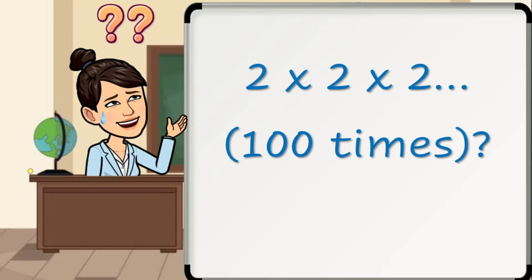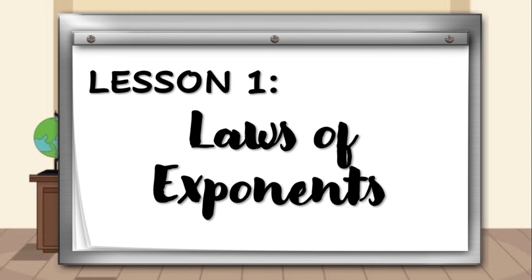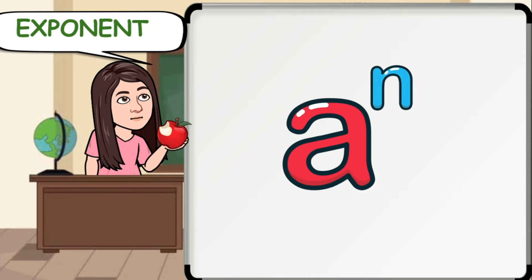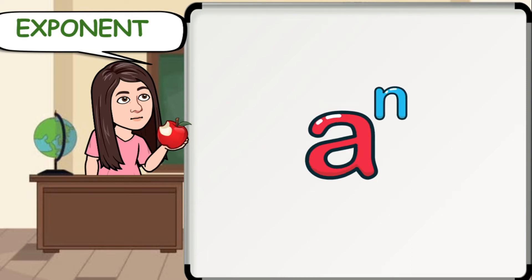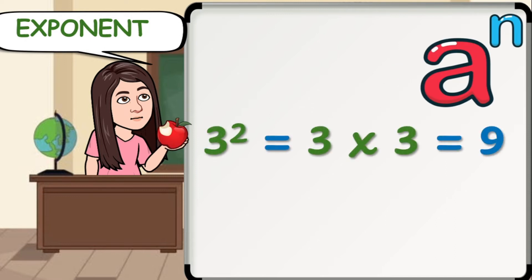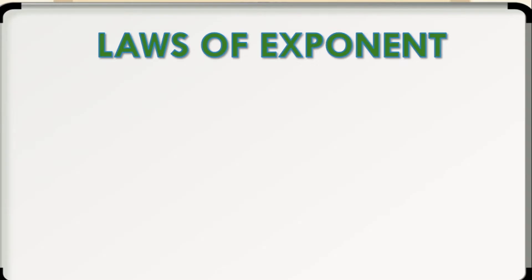This leads us to our first lesson on quarter 2 week 5, which is laws of exponents. Exponents are also called powers or indices. Mathematically speaking, in a raised to n, a is the base and n is the exponent, index, or power. The exponent of a number says how many times to use the number in a multiplication. For example, 3 squared means you have to multiply the number 3 to itself twice, and that is equal to 3 times 3, which is equal to 9.